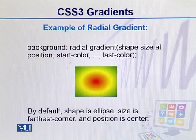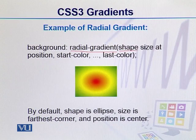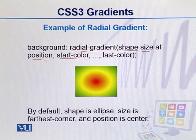If we look at the syntax, in radial gradients we simply mention radial-gradient. Then we give its parameters: we mention the shape, the size, and which particular position will be set. We will discuss it further. And then we mention the starting color, which is the center point color, and then we add color stops.